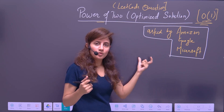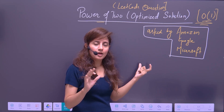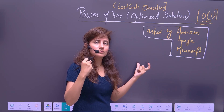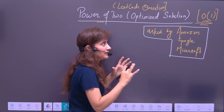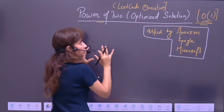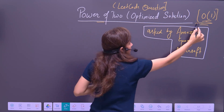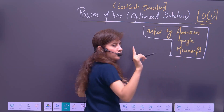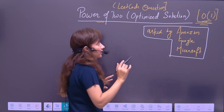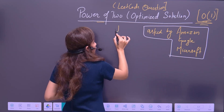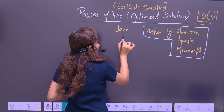Find out if the number is power of two in constant time. We'll see the optimized solution which takes constant time, O(1). And we will solve this question in Java programming language.